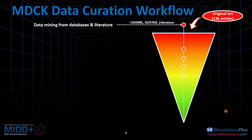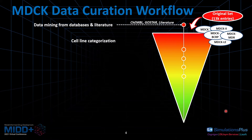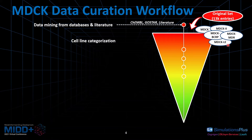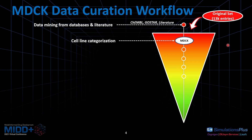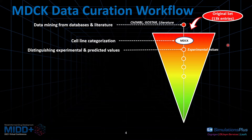The second step we were focusing on is cell line categorization. When looking at entries from databases, we find that cell line information is not properly annotated, and in some cases not annotated at all. This is a pretty important step because there are different MDCK cell lines — some are infected with MDR, multi-drug-resistant genes, and some are low efflux cell lines. They cannot be mixed together because a compound measured through different MDCK cell lines will have different permeability values. So we need to categorize them properly by going back to the literature to extract that information. In this workflow, we're only focusing on MDCK generic and MDCK 1 cell lines.